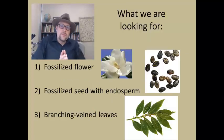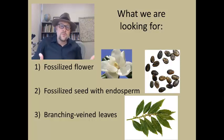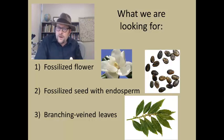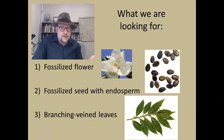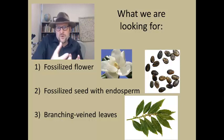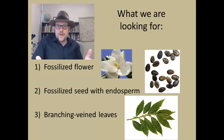In this lecture we are going to go on an expedition into the fossil record and see if any of the known fossils might be the missing link between flowering plants and the naked seed plants, the gymnosperms. We need to assemble a list of things that we are looking for: obviously we would like to find a fossilized flower, but we will settle for a fossilized seed with endosperm, a fruit structure around it, or maybe a branching veined leaf like we saw in some of the angiosperms.